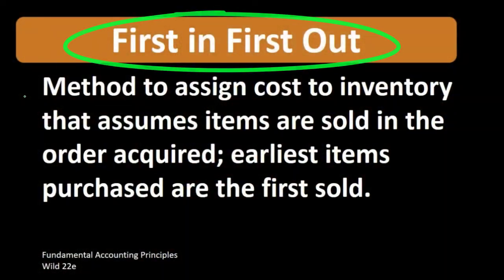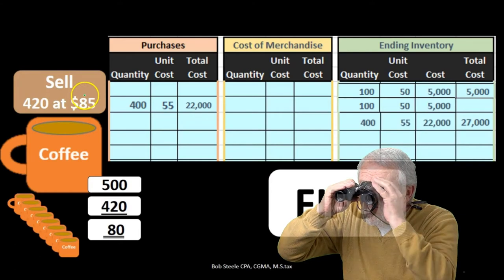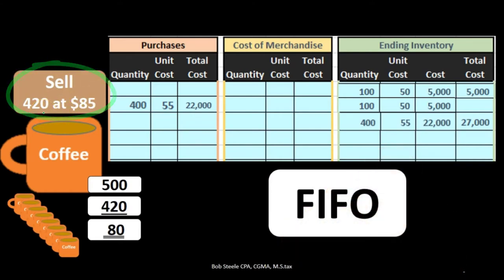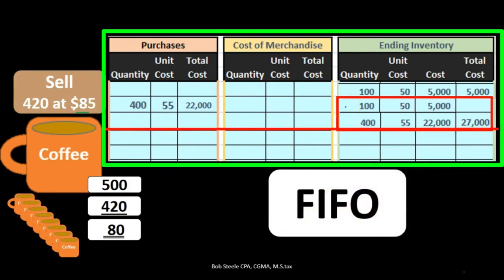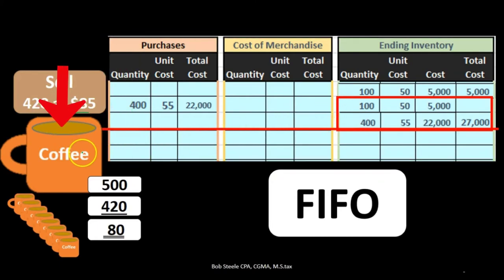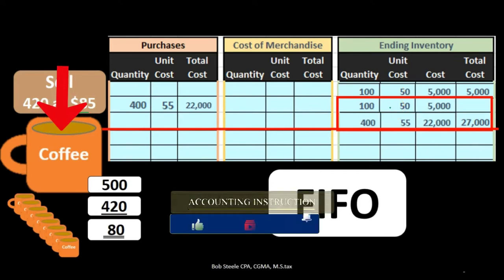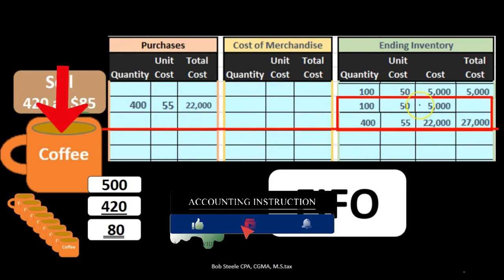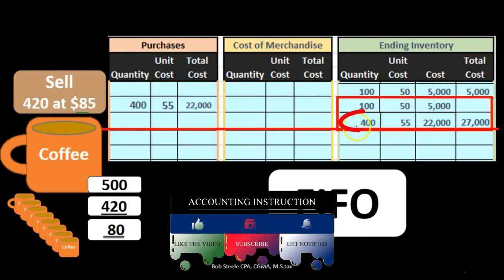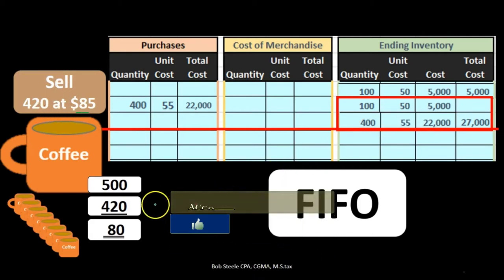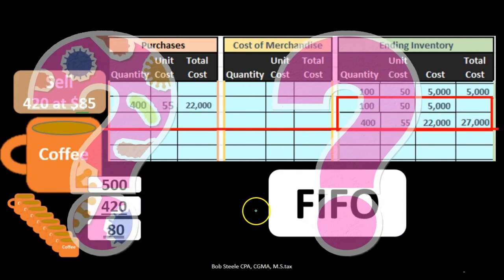Let's take a look at an example. We're going to sell 420 units at $85 — that $85 is the sales price, not the cost. Looking at cost on our worksheet, we have two layers of inventory. It's all the same inventory — coffee mugs — but purchased at different amounts at different times. We purchased 100 of them at an earlier point for $50, totaling $5,000, then purchased another 400 at $55.